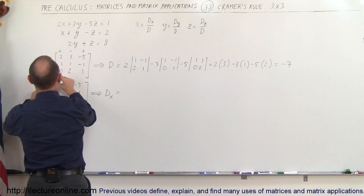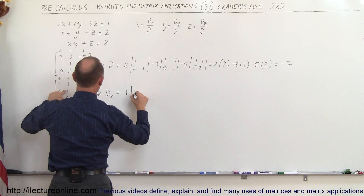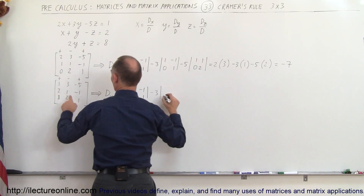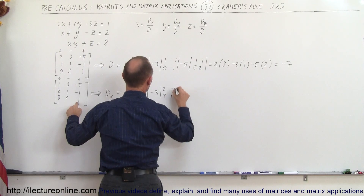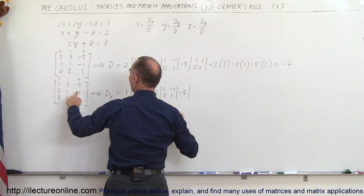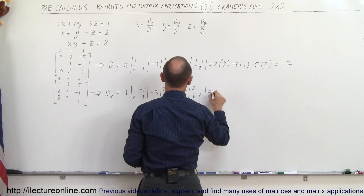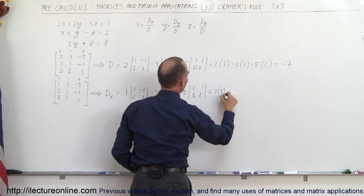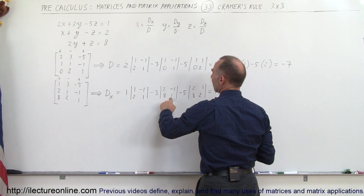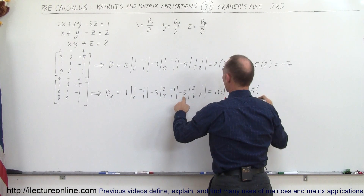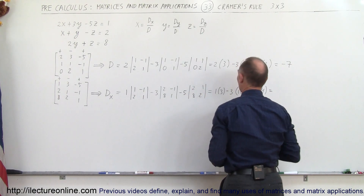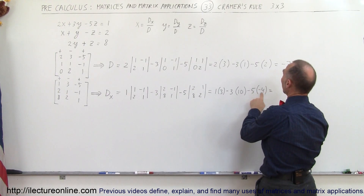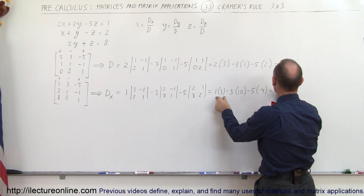Using the plus, minus, plus pattern: 1 times the elements 1, 2, minus 1, and 1; minus 3 times the elements 2, negative 1, 8, and 1; and then plus minus 5 times the elements 2, 1, 8, and 2. This becomes 1 times (1 minus minus 2), which is 3; minus 3 times (2 minus minus 8), which is 10; and minus 5 times (4 minus 8), which is minus 4. So we get 3 minus 30 plus 20 equals minus 7. D sub x equals minus 7.